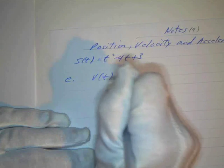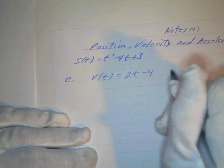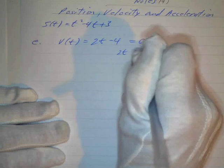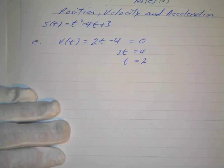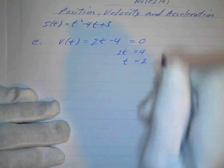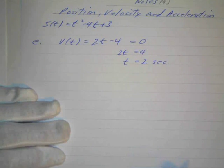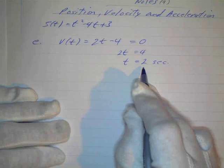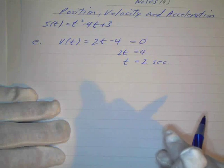My velocity as a function of time is just the derivative, so that's going to be 2t minus 4. We set that equal to zero. Add 4 to both sides, so 2t equals 4, which gives t equals 2. So it changes directions at 2 seconds. For what values of T does a particle change directions? It changes directions when T is 2 seconds.